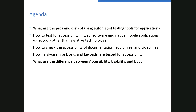So what am I going to cover in the next hour or so? The pros and cons of using automated testing tools for applications, how to test for accessibility in web software and native mobile apps using tools other than assistive technologies, how to check for accessibility of documentation, audio files, video files, how hardware like kiosks and keypads are tested for accessibility, and what the difference is between accessibility, usability, and bugs.